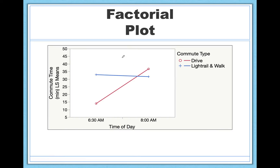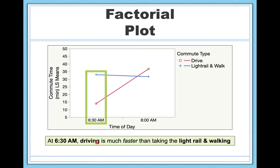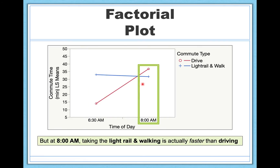But both of those explanations alone would be misleading — that's why we really care about the interaction. At 6:30 a.m., driving is much faster than taking the light rail and walking. But at 8 a.m., taking the light rail and walking is actually faster than driving. That's the power of the factorial analysis of variance — we get a full, complete explanation. Now I know: if I'm leaving at 6:30 a.m., I'll probably just drive; if I'm leaving at 8, I'll take the light rail. That's about the level of detail for this series of videos — I hope this gives you a sense of what analyses of variance are all about and the flexible, dynamic ways we can use them to learn about the world.